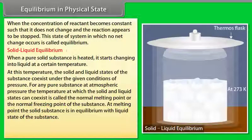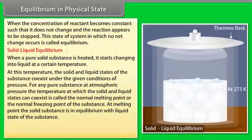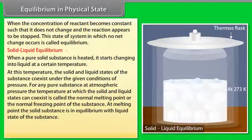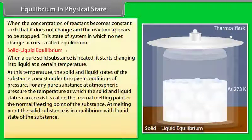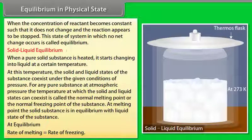At melting point, the solid substance is in equilibrium with the liquid state. Consider ice and water at 273 Kelvin, the melting point of ice, taken in a perfectly insulated thermos flask. The temperature as well as the masses of ice and water remain constant, representing a dynamic equilibrium. The number of molecules going from ice into water equals the number going from water into ice. Thus, at equilibrium, the rate of melting equals the rate of freezing.